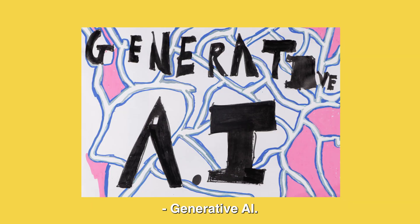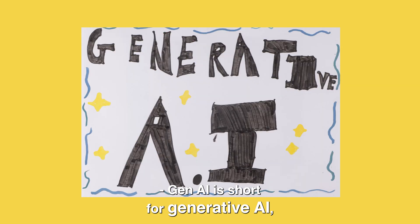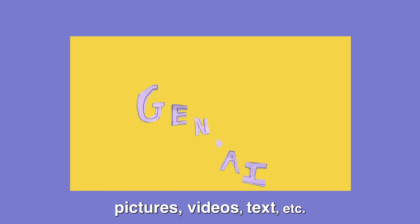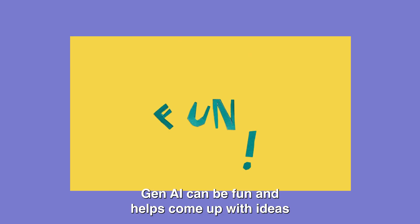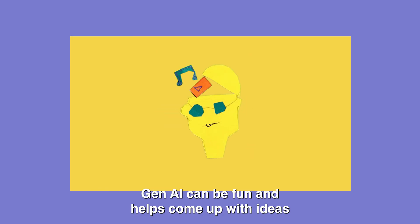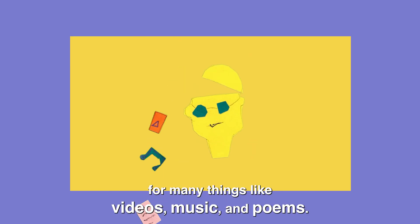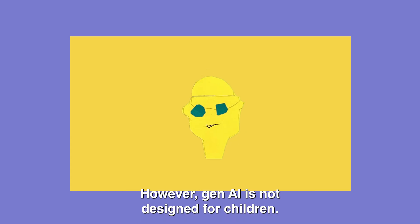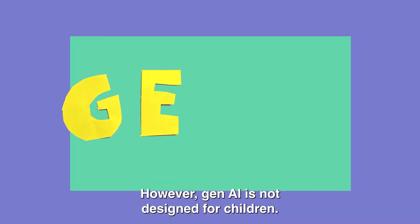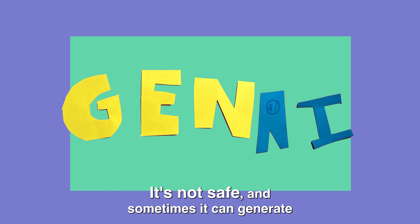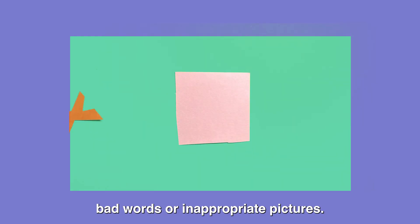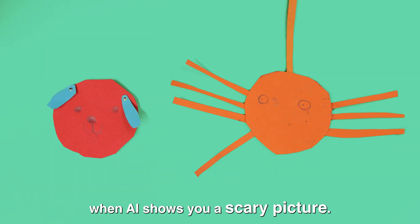Generative AI. Gen AI is short for generative AI, which can help with creating pictures, videos, text, etc. Gen AI can be fun and helps you come up with ideas for many things like videos, music and poems. However, Gen AI is not designed for children. It's not safe and sometimes it can generate bad words or inappropriate pictures. For example, you might ask AI to make a cute dog picture but AI could show you a scary picture instead.